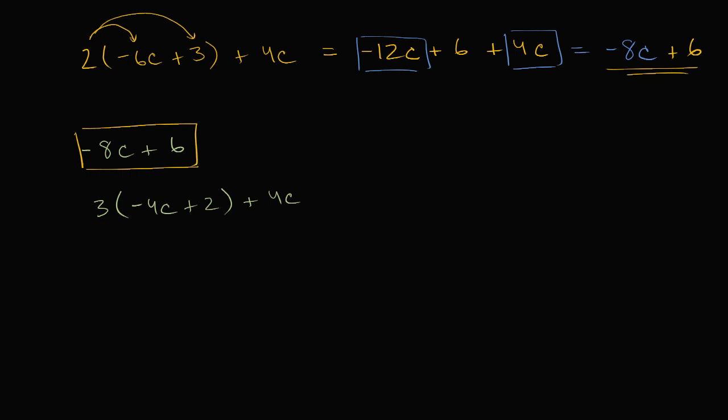Now what about this one down here? Well to figure that out, let's simplify it. So let's distribute the three. Three times negative four C is negative 12 C. Three times positive two is positive six. So plus six. And then we have the plus four C over there. It's looking good.